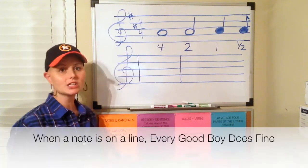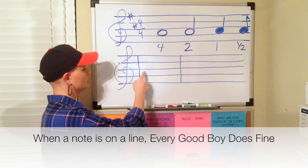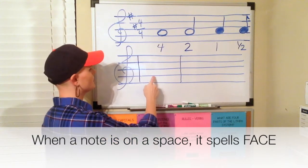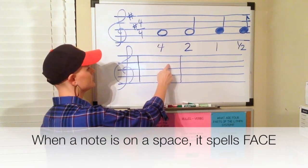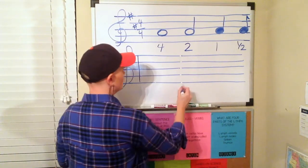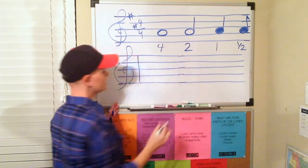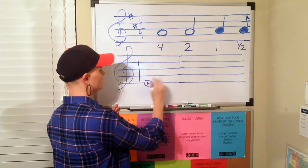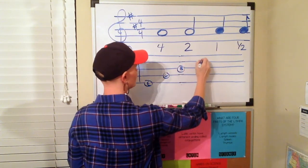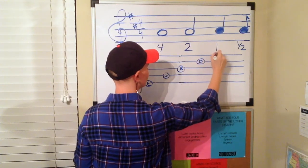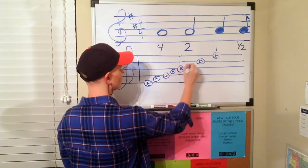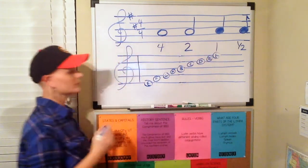And it says, when a note is on a line, every good boy does fine. When a note is on a space, it spells face F-A-C-E. So watch this. I'm going to take out that measure line because it's not helpful. So what we're going to do, every good boy does fine. Watch this. So when a note is on a line, every good boy does fine. And when a note is on a space, watch this, it spells face. And look what we have, we have our scale.